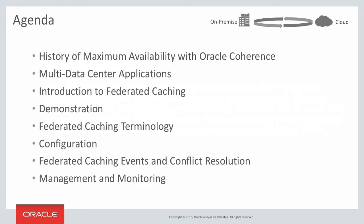The agenda for this session looks like the following. Firstly we'll briefly discuss some of the existing high availability features of Oracle Coherence. Next we'll look at some of the challenges developers face when architecting multi data center enterprise applications and talk about the concept of federated caching in general. We'll then walk through a demo of federated caching in action. Next we'll introduce the new federated caching terminology, learning how to use these new terms when discussing configuration, monitoring, and working with federated caching events.